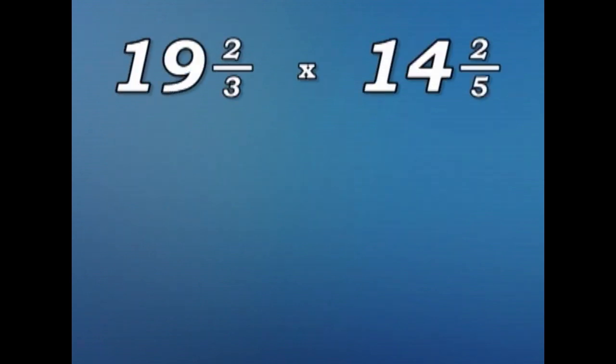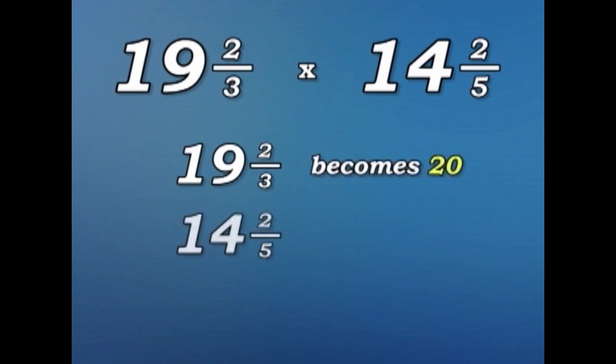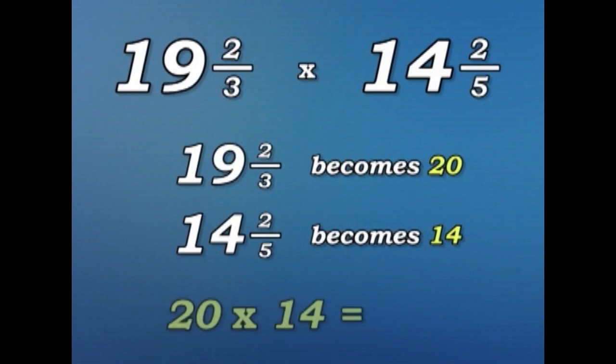For example, 19 and two thirds multiplied by 14 and two fifths. 19 and two thirds, we round up, becomes 20. And 14 and two fifths becomes 14. So, now we just have to multiply 20 times 14, which gives us 280.